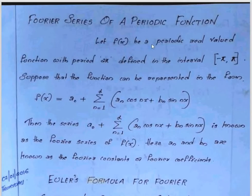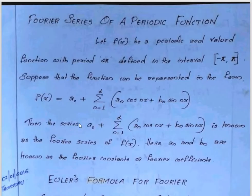In a Fourier series of a periodic function: let f of x be a periodic real-valued function with period 2π defined on the interval minus π to plus π. If the function can be represented as f of x equals a0 plus sigma from n equals 1 to infinity of (an cos nx plus bn sin nx), then this series is called the Fourier series of f of x. The an and bn are called Fourier constants or Fourier coefficients.